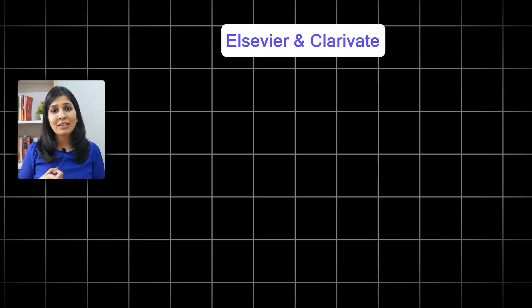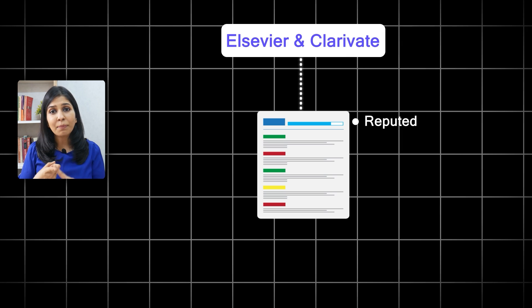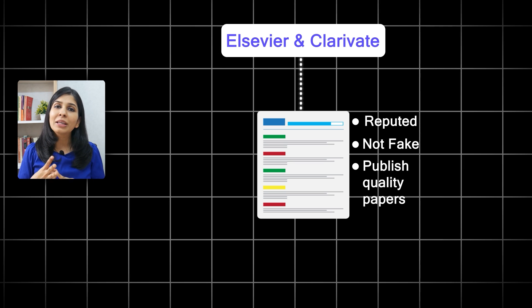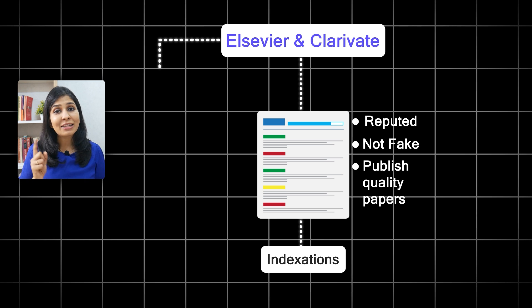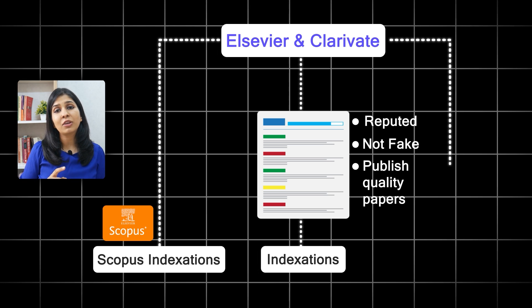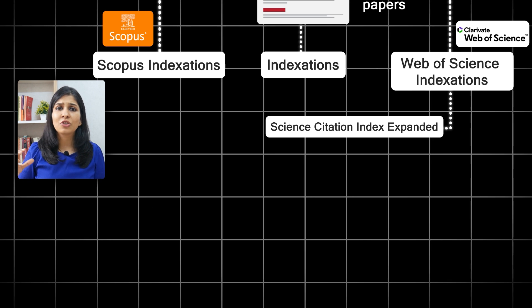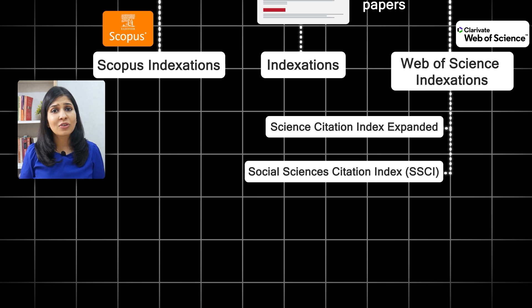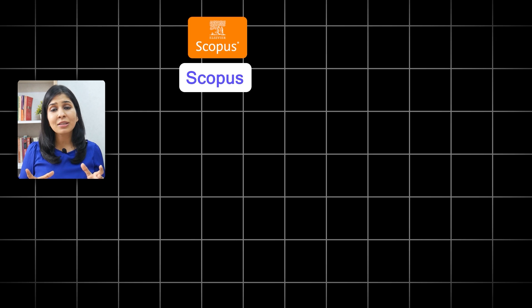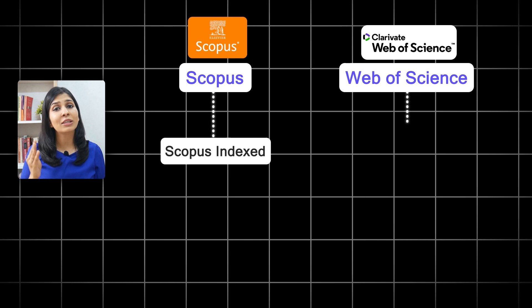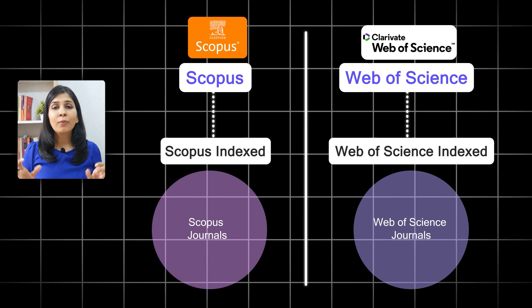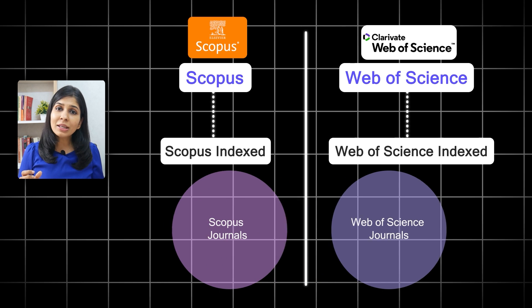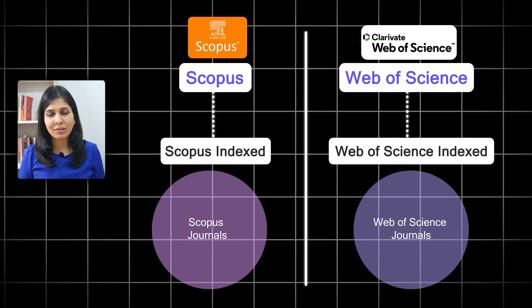Now we have the list of journals, but we have no idea whether they are Scopus or Web of Science indexed. Let's understand what indexation is and why it is important. Certain organizations like Elsevier and Clarivate have taken out a list of journals which are reputed, not fake or predatory, and publish decent quality papers. These lists are called indexations. The list by Elsevier is called Scopus indexation and the list by Clarivate is called Web of Science indexation, which is further broken down into smaller lists such as Science Citation Index Expanded, Social Sciences Citation Index, etc.